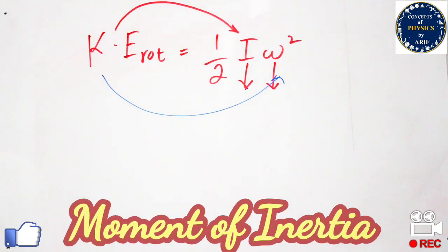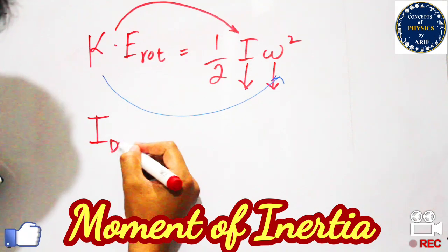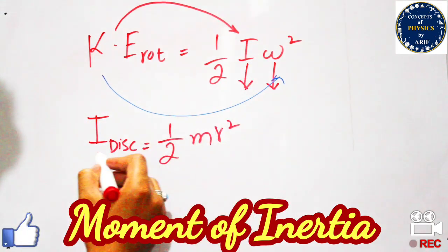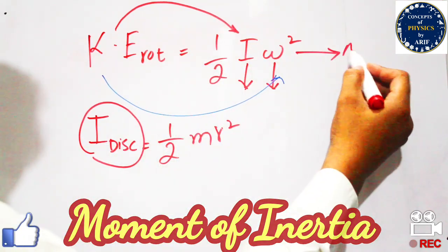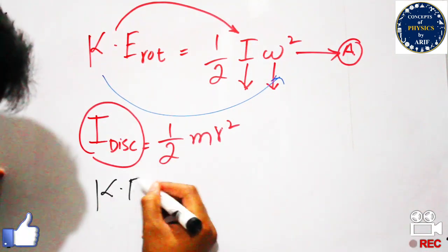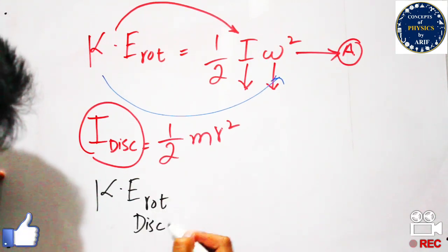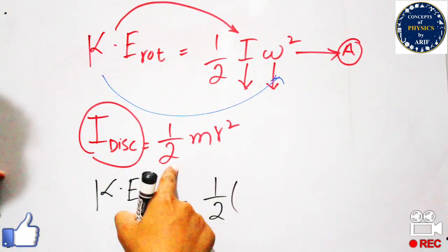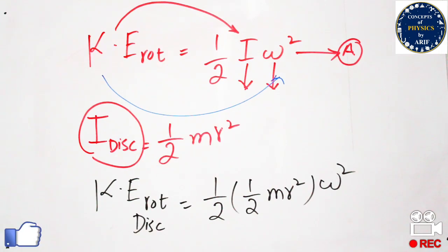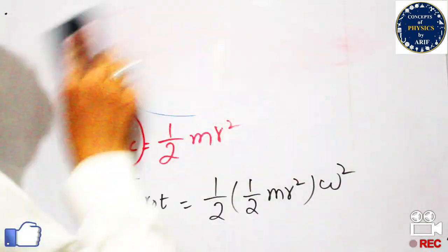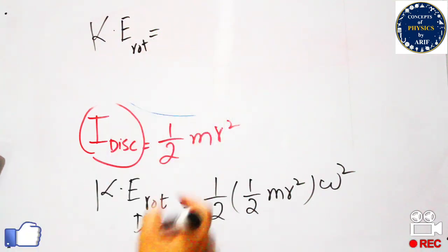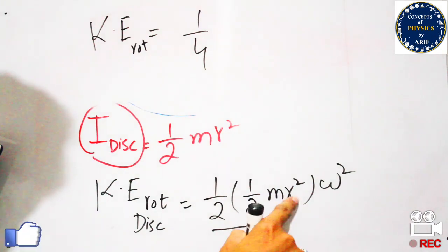The moment of inertia for a disk is equal to one-half m r squared. We will substitute this value of I into the expression for rotational kinetic energy. So the rotational kinetic energy for a disk equals one-half times one-half m r squared times omega squared. The final expression for rotational kinetic energy specifically for a disk is equal to one-quarter m r squared omega squared.